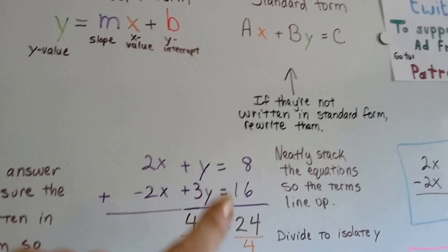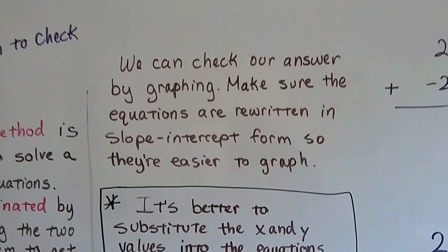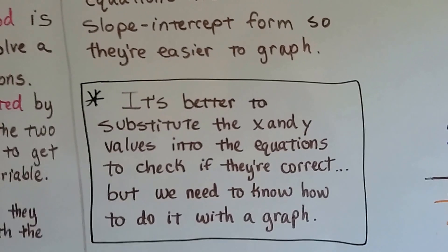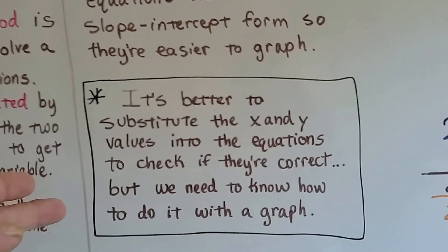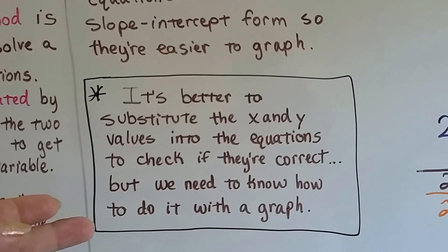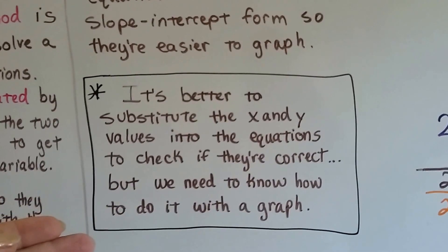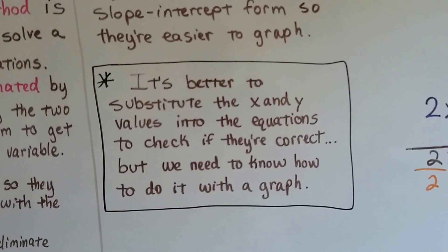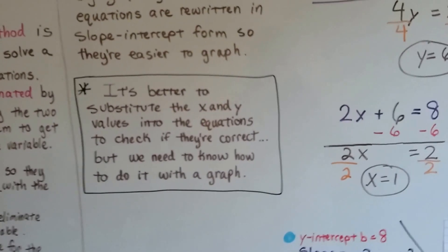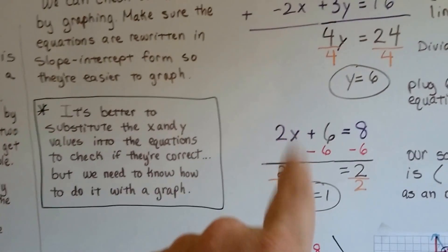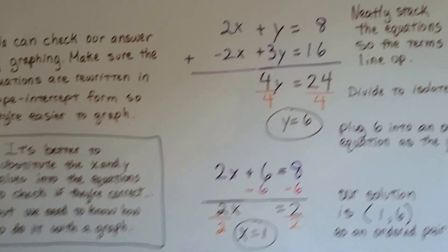And you want to make sure that they're written in standard form when we are adding them and stacking them. When we're done doing that and we know what x and y equals, then we want to put it in slope-intercept form so we can have an easier time graphing them. Now, what's amazing about learning how to do this is it's actually better to substitute the x and y values that you find into the equations to check to see if they're correct. But we need to know how to do it with a graph.